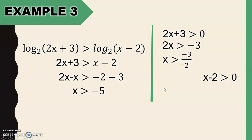Then, the second argument of the logarithm, x minus 2 greater than 0. So x is greater than 2. So then after, plot all of this on our number line.